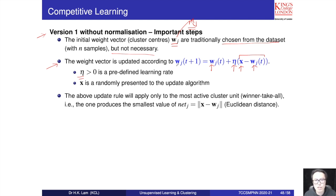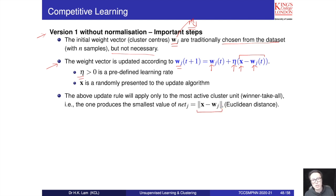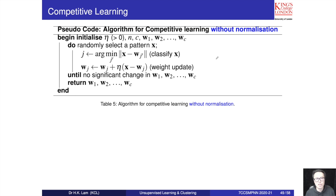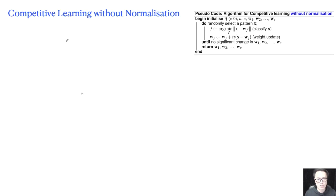To identify which is the winner cluster, we use the Euclidean distance: find the distance between the randomly picked sample and all cluster centers, then pick the one that gives the smallest value — that is the winner cluster we update. I will give an example to demonstrate this idea using the pseudo-code.